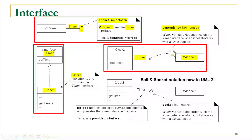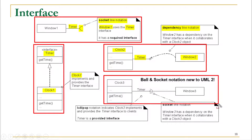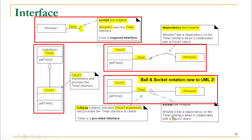Window2 has a dependency on the Timer interface when it collaborates with a Clock2 object. One last notation is the ball-and-socket notation, which is new to UML 2.0. This combines the socket line and lollipop notation: the lollipop indicates that Clock3 implements and provides the Timer interface, while the socket notation indicates that Window3 has a dependency on the Timer interface whenever it collaborates with Clock3.